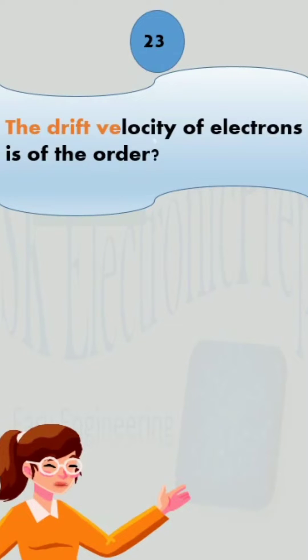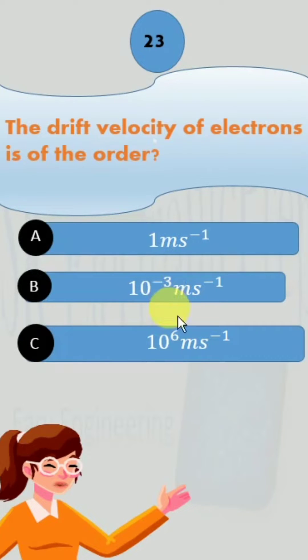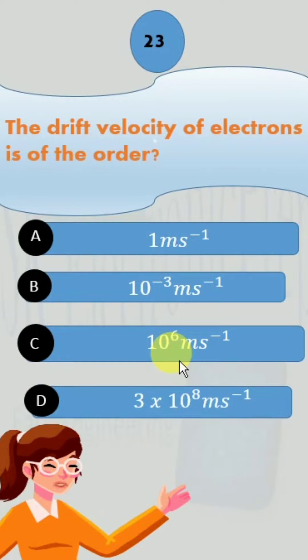The drift velocity of electrons is of the order? Option A: 1 meter per second. Option B: 10 raised to the power minus 3 meters per second. Option C: 10 raised to the power 6 meters per second. And option D: 3 into 10 raised to the power 8 meters per second. Let us calculate the drift velocity through the equation practically.